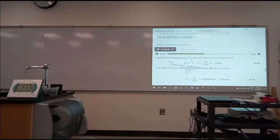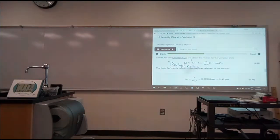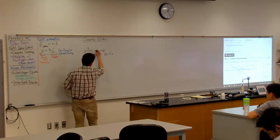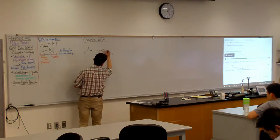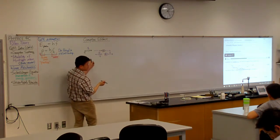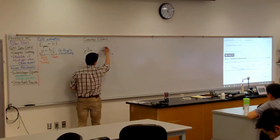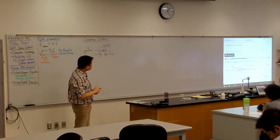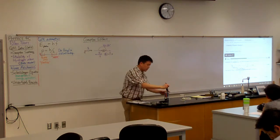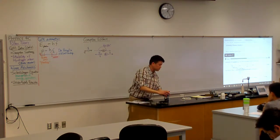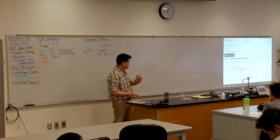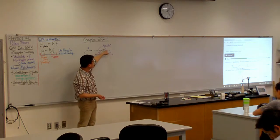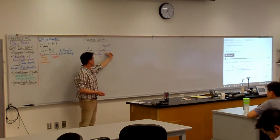So let me set it up. In this formula, theta is the angle between the incident light and the outgoing light. Right now I'm doing the special case of theta equals 180 degrees — a head-on collision where light bounces back straight. To make it conceptually simpler, I will deal with that special case. If you want the more general case, you can do that using vector notation.